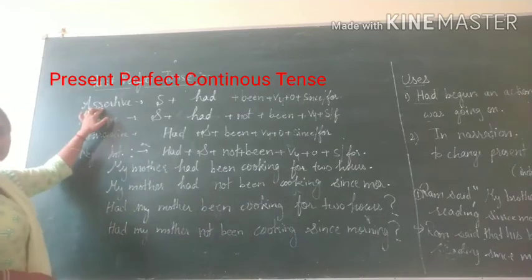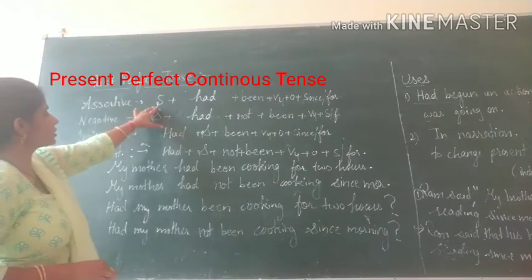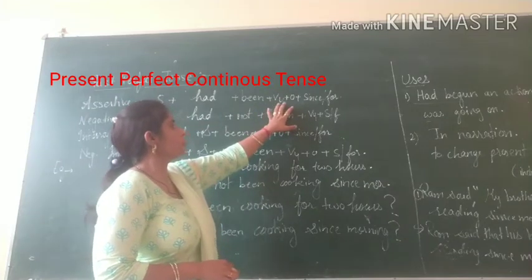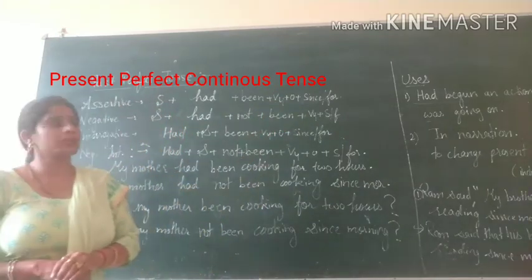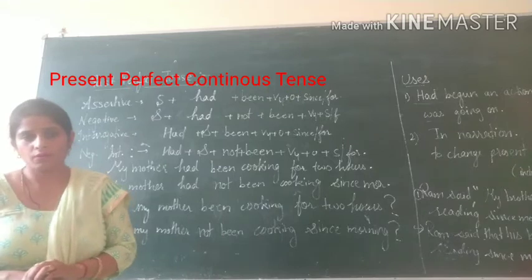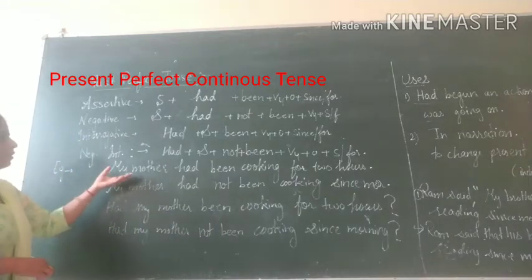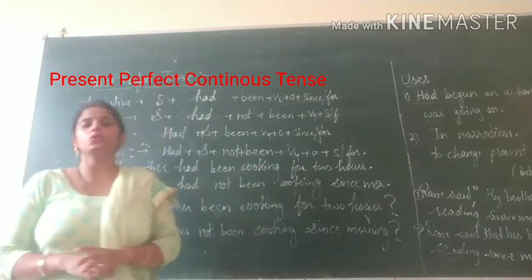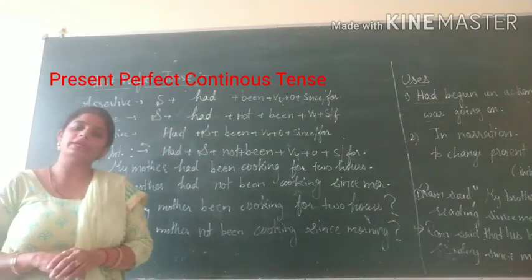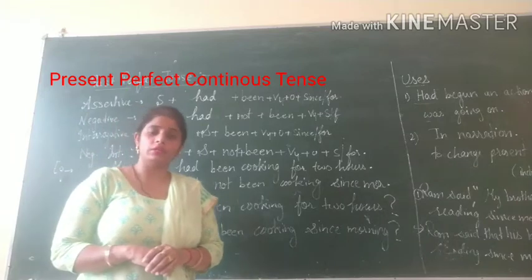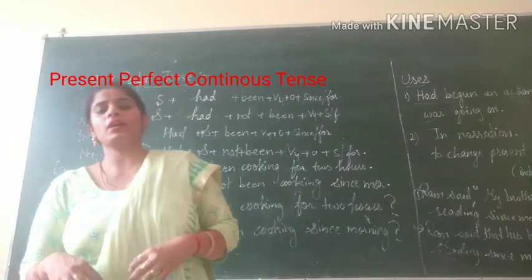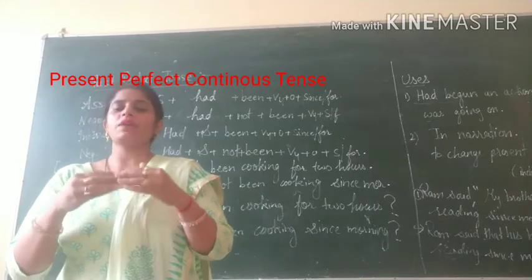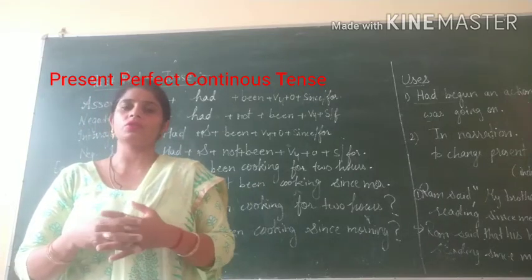Now for the affirmative structure: Subject + had + been + present participle + object + since/for. You can see with example: 'My mother had been cooking for 2 hours.' She had started cooking 2 hours before, and at that point she was still cooking.